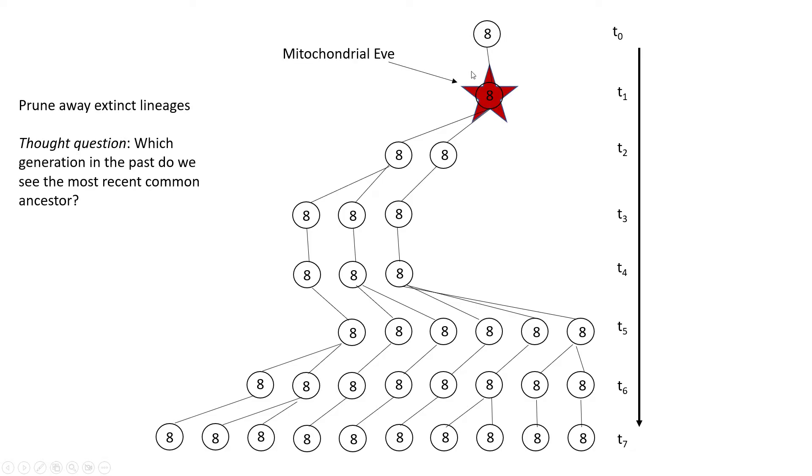Well, no, this is the most recent common ancestor. So this is the individual of which all descendant lineages come from. So this is mitochondrial Eve.